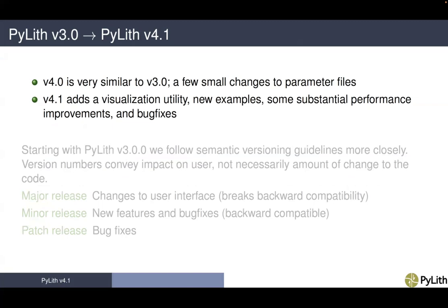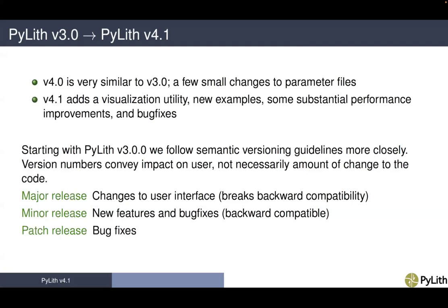There have been relatively few changes from PyLith version 3 to the current version 4.1. Version 4.0 is very similar to version 3.0 with a few small changes to parameter files mainly related to faults. In version 4.1, we've added a visualization utility, new examples, some substantial performance improvements, and quite a few bug fixes. Starting with PyLith version 3, we are following semantic versioning guidelines more closely, meaning that the version numbers convey the impact on users and not necessarily the amount of change to the code.